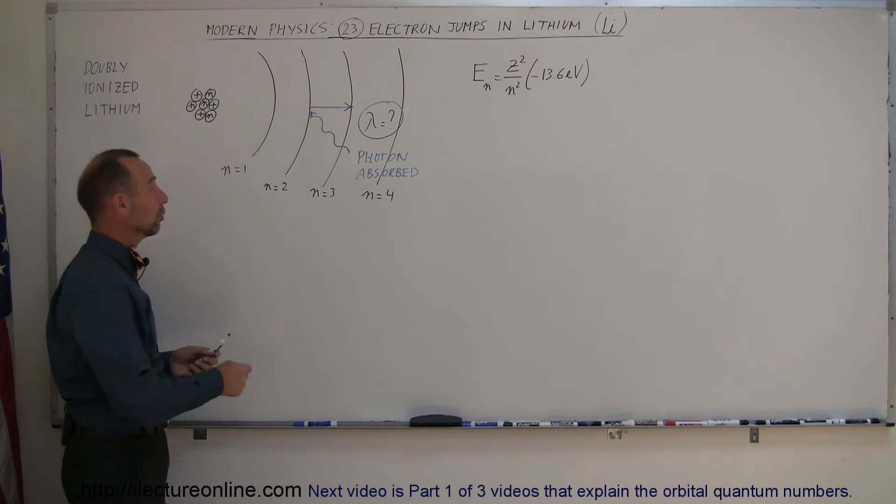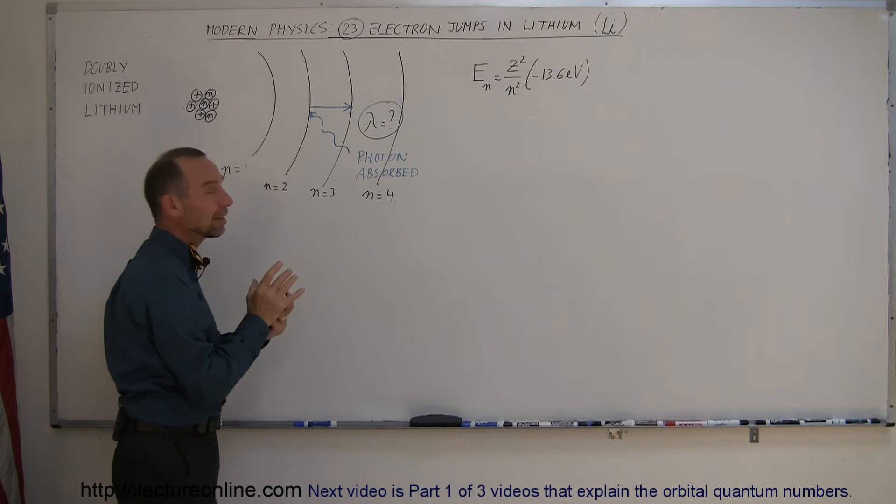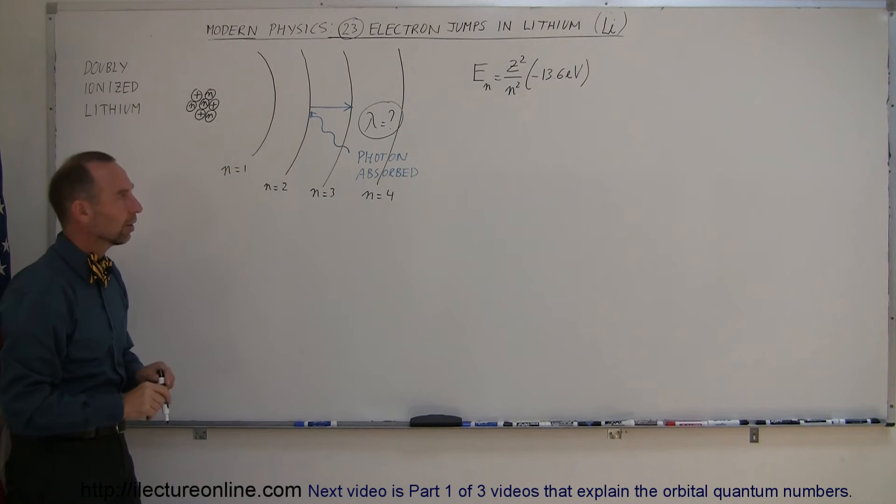In order to do that, we have to know what the energy level is for the second level, the energy of the third level, take the difference, and then find the associated photon.